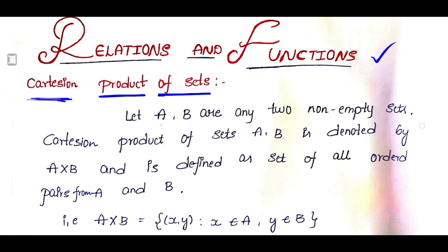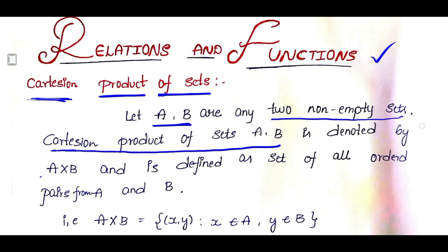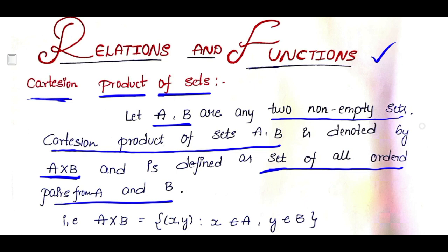A and B are any two non-empty sets. Consider A and B are two non-empty sets. Then the Cartesian product of sets A and B is denoted by A cross B — this is read as A cross B, not A into B. It is defined as the set of all ordered pairs from A and B. A cross B is the set of all ordered pairs; it contains all ordered pairs from A and B.